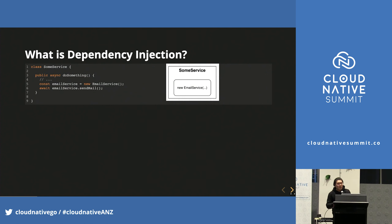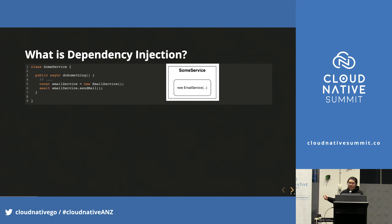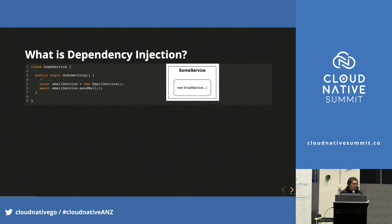Let's see some code. Imagine that we have a class named SomeService, and when it's called to do something, it will send an email using EmailService. SomeService instantiates an EmailService object inside the DoSomething method. This version does not use dependency injection.